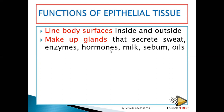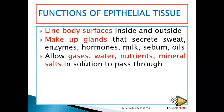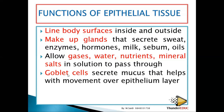They secrete sweat, enzymes, hormones, and milk. They also allow gases, water, nutrients, and amino acids in solution to pass through — meaning they can filter what goes through and what does not. Lastly, we have goblet cells, which are very important in secreting mucus. If you look at your digestive system or your pancreas, goblet cells are present. We will look at the ileum in grade 11.